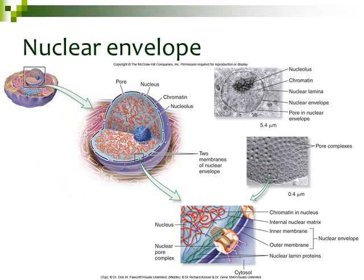I'm going to start off by talking about the nucleus, specifically the nuclear envelope. The nuclear envelope is the membrane that makes up the nucleus. If we look at our nucleus, it's in the middle of our eukaryotic cell. The nuclear envelope is made up of phospholipids, and it also has nuclear pores that allow things to go in and out of the nucleus.